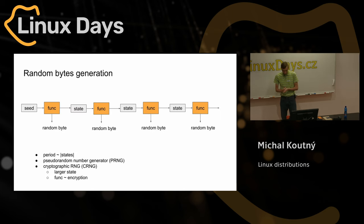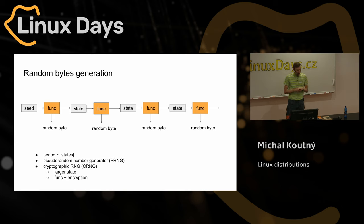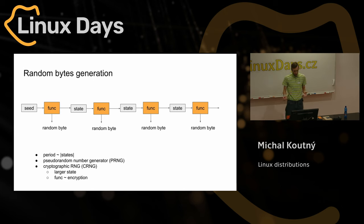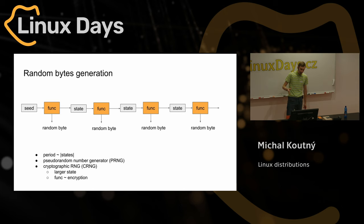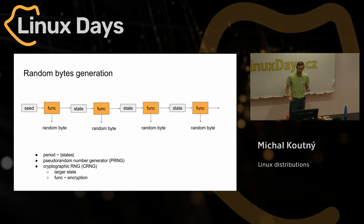Computers are precise, accurate machines, so they should be deterministic. So I was wondering: where does the randomness come from? If we have something random on a computer, usually it's pseudo-random, generated by a pseudo-random number generator. In a very rough explanation, it is a process where we have some internal state of the generator that is initiated by a seed, and then we have a function that transitions from one state to another, and while it transitions, it generates a byte which should be random.